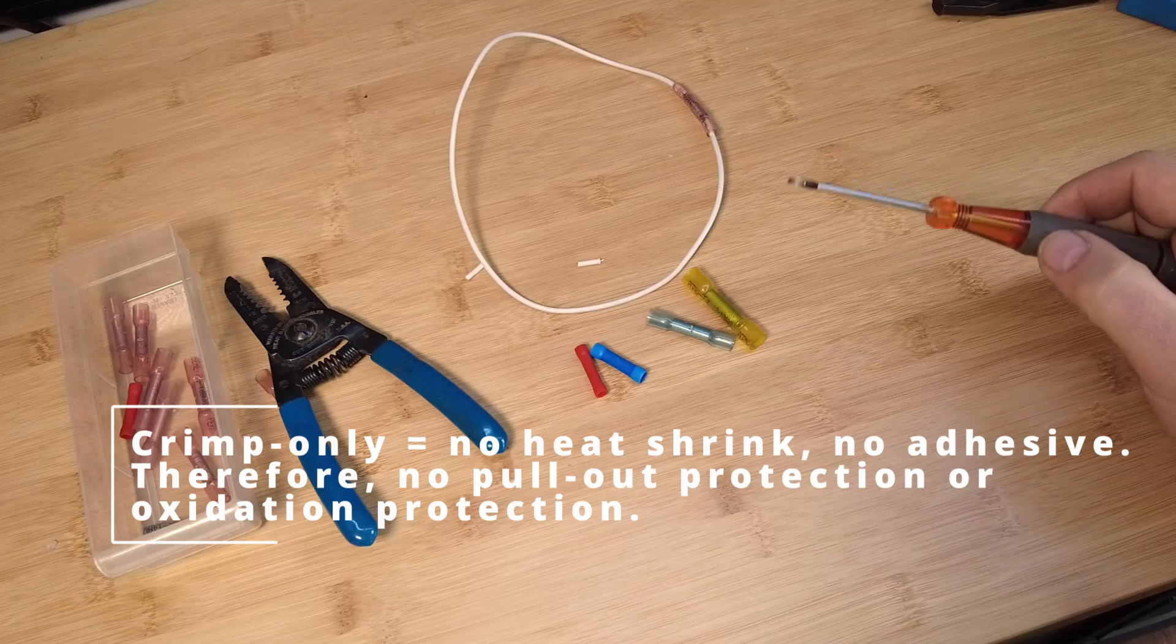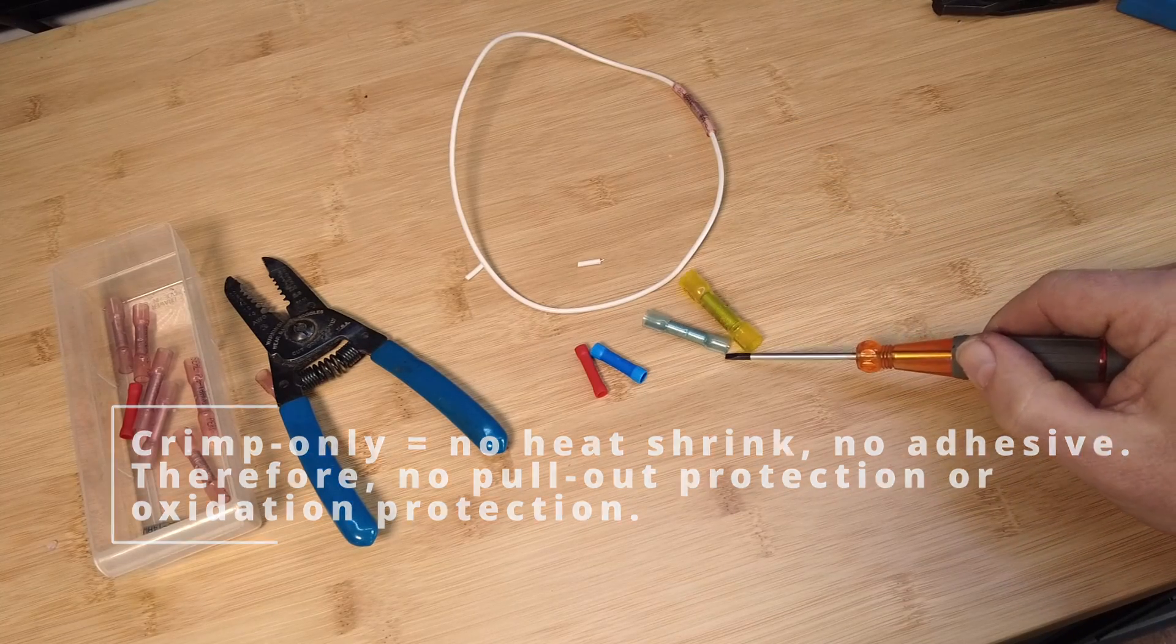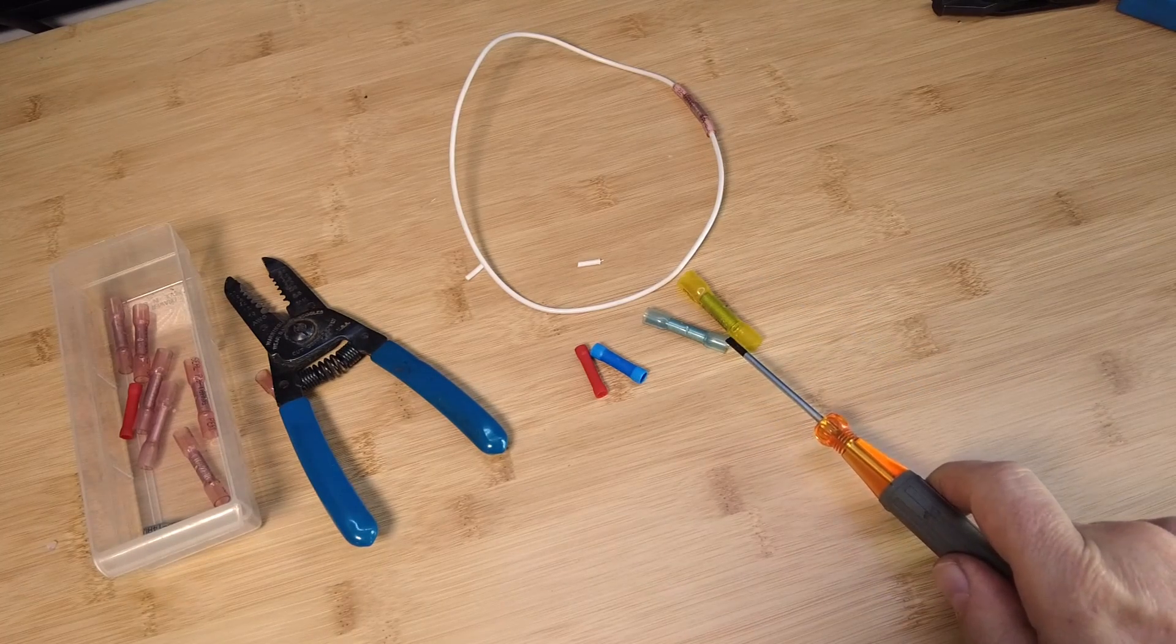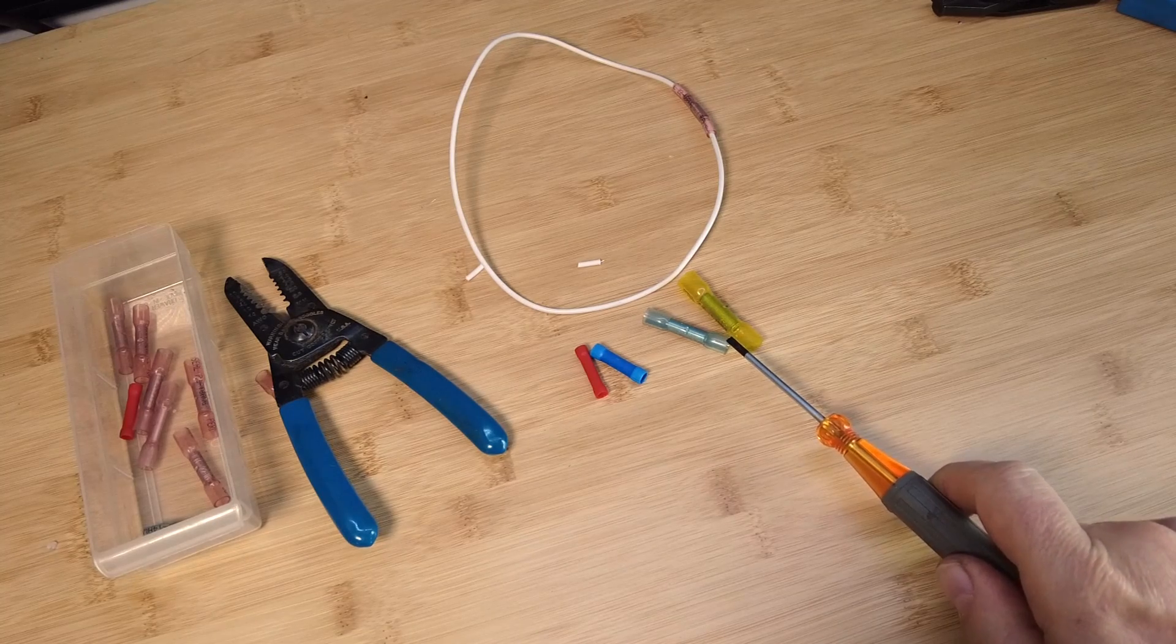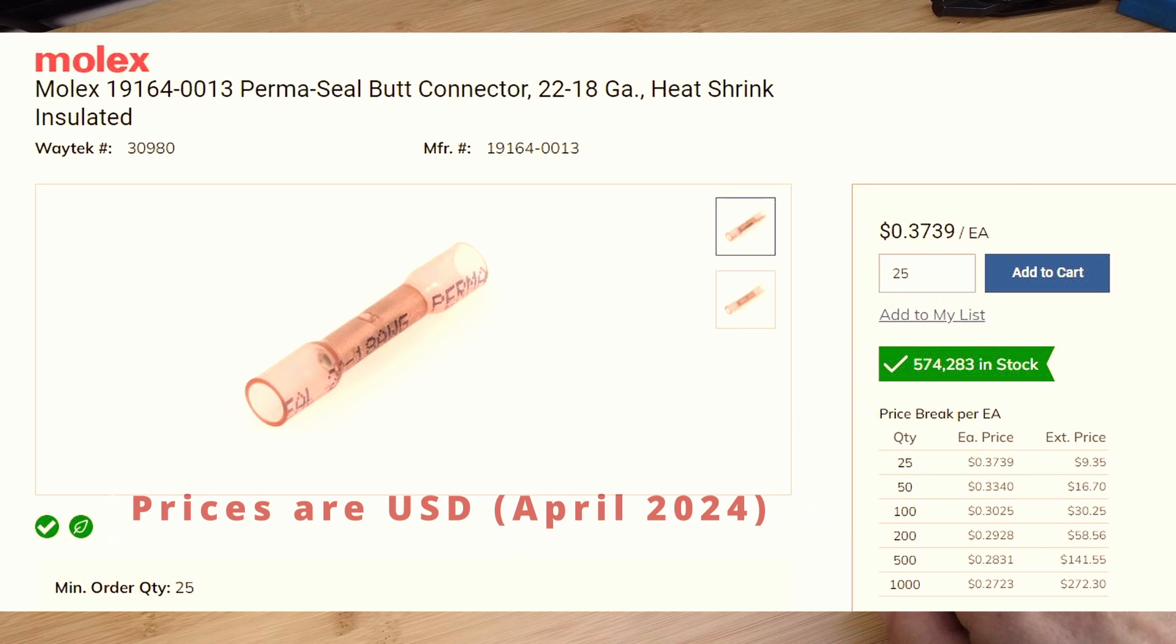Now, granted the emergency vehicles we work on are not yachts, but they're both mission critical items. And we feel that it's worth the extra expense in terms of cost, the heat shrink adhesive connectors are usually between two and four times the cost of those.